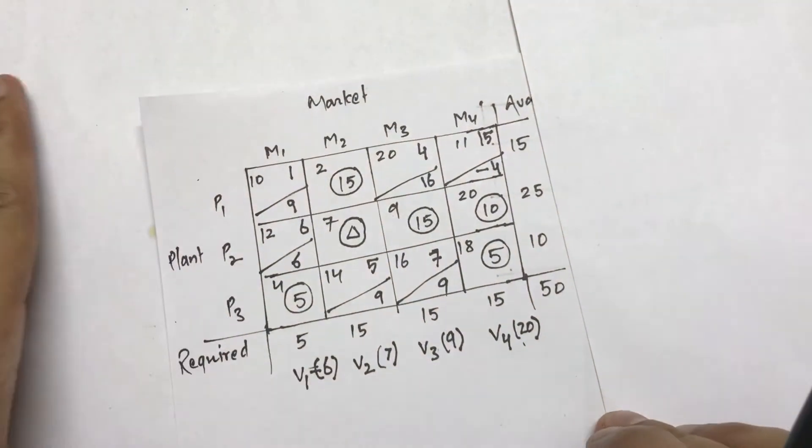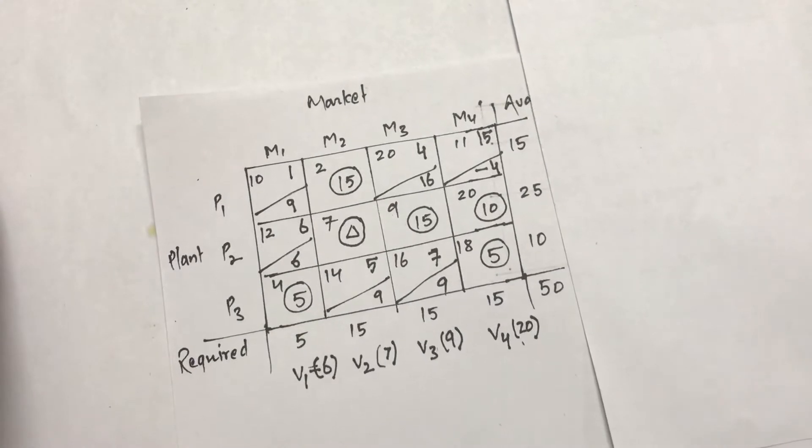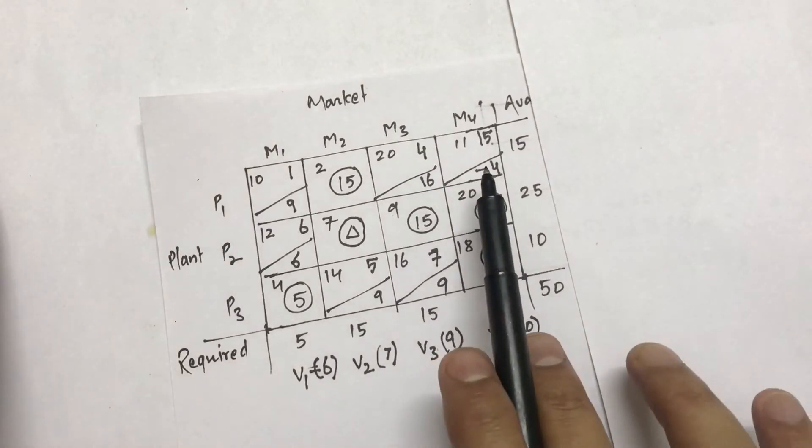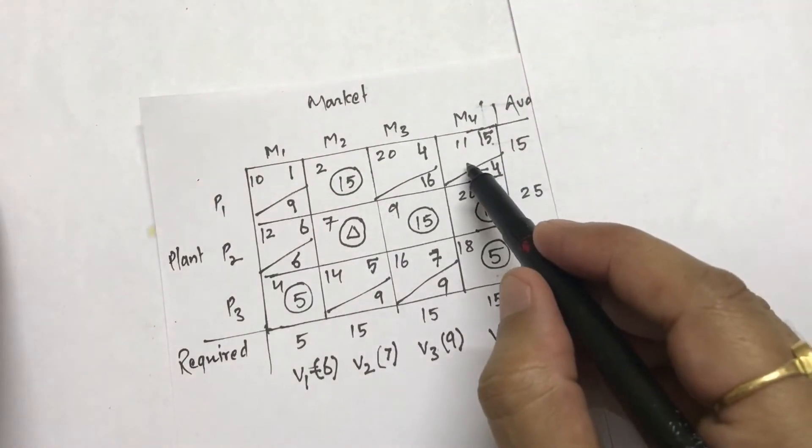Hi everyone, so this is the final part of this transportation problem in which I'll be discussing optimality. This was the solution which we discussed and in that I found one negative that shows that solution is not optimal. So in order to remove this negative, I should start making a particular loop.